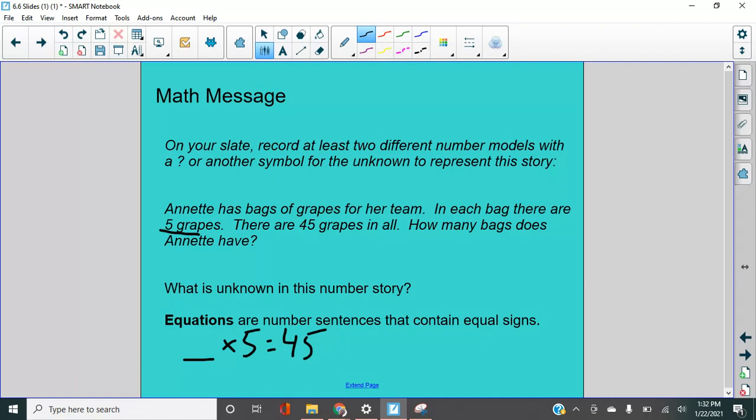Now I put a blank there. I will tell you what we do in fourth grade and then beyond is to put just a letter there, right? So B for bags, B times five equals 45. And then we have to think about, well, what would fit here, right? Or here, right? It's the same thing. What would fit there to make that true? So what number would fit there to make that true? It's the number nine, right? So now if we answer that question, how many bags does Annette have in all? Annette has nine bags, right? That complete sentence there.